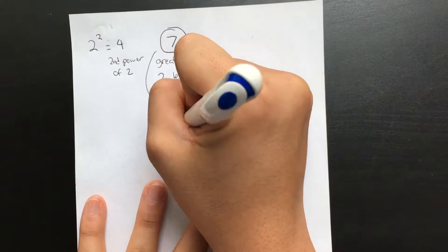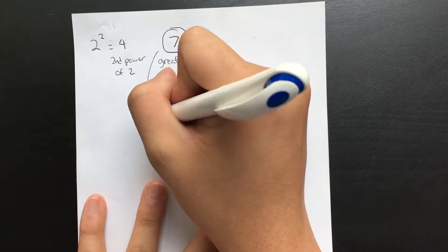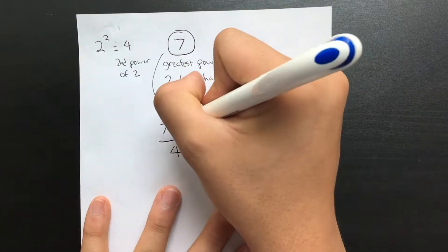What you want to do then is take your number minus the power of 2, and all that over the power of 2. 7 minus 4 over 4, and that equals 3 fourths.